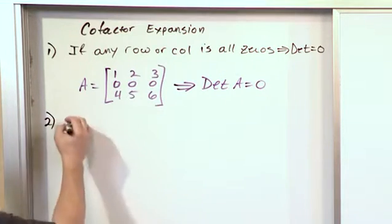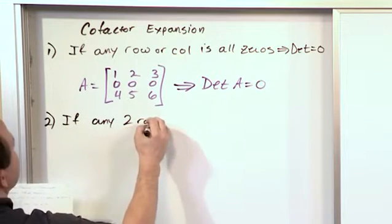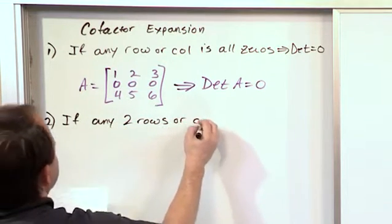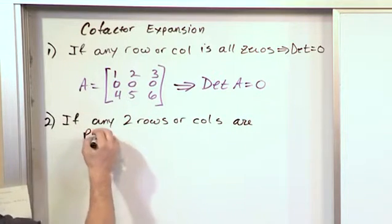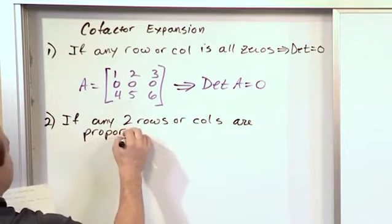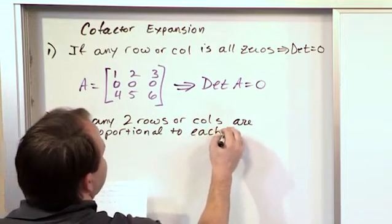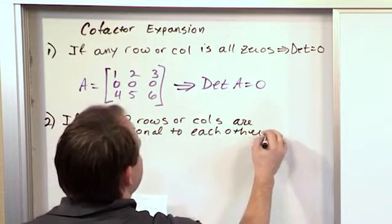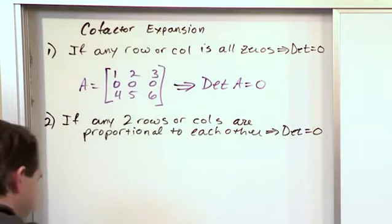Number two is pretty cool. If any two rows or columns are proportional to each other, then the determinant is also equal to zero.